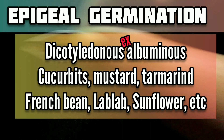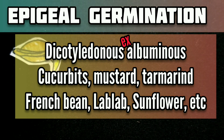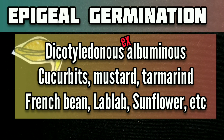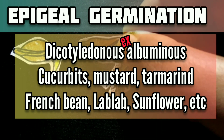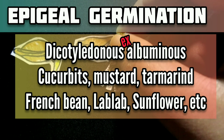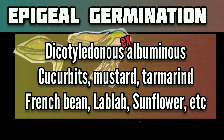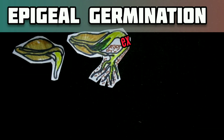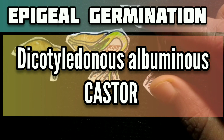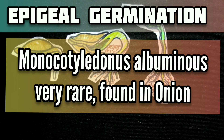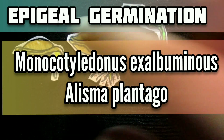Epigeal germination is shown by some dicotyledonous plants and a few monocots. Common examples are found in dicotyledonous exalbuminous plants such as cucurbits, mustard, tamarind, french beans, Tolicose, Lablab, and sunflower. In the case of dicotyledonous albuminous: castor. Monocotyledonous albuminous epigeal germination is very rare but found in onion, and monocotyledonous exalbuminous is found in Alisma plantago.